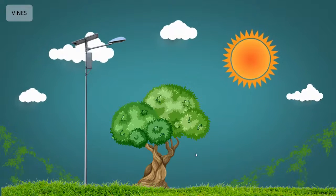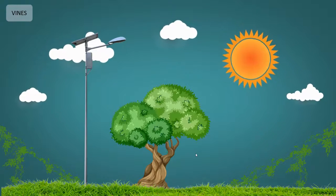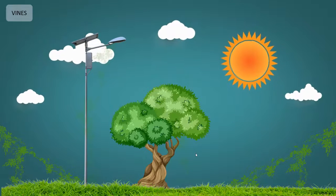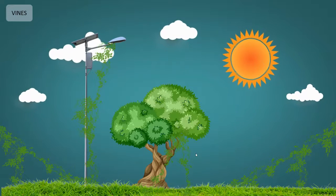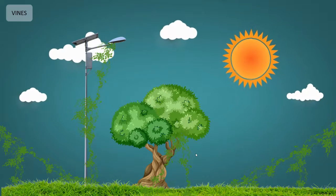Vines. Any plant whose main stem is too weak to grow erect without support is called a vine. Vines take support and climb walls, poles, and tree trunks.